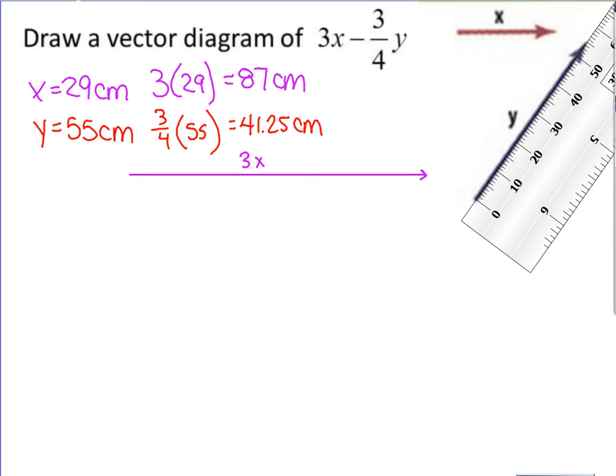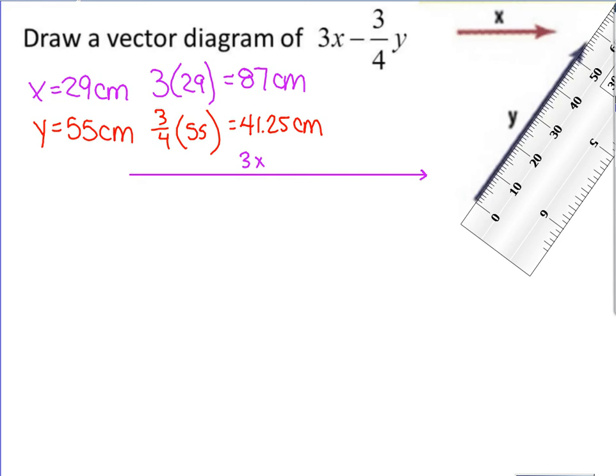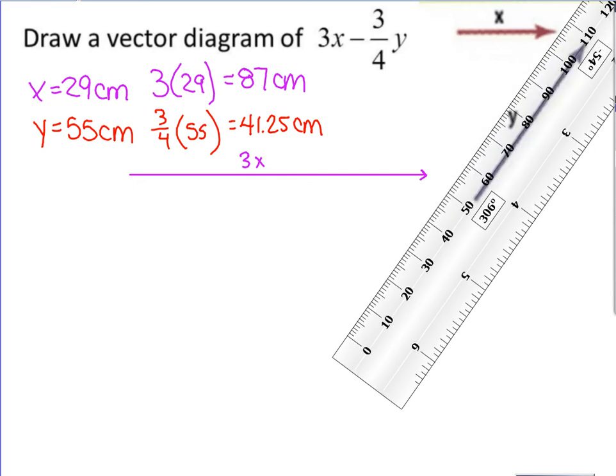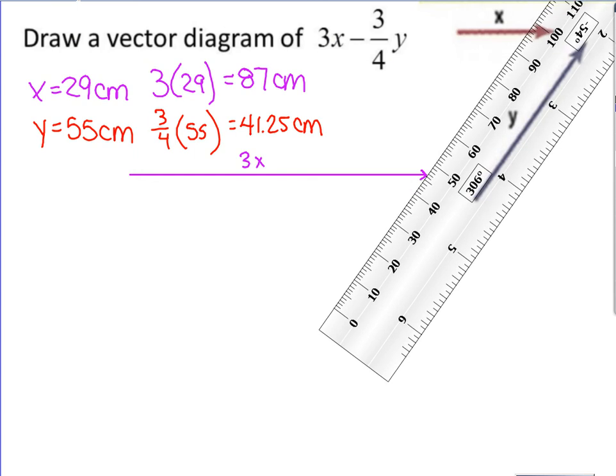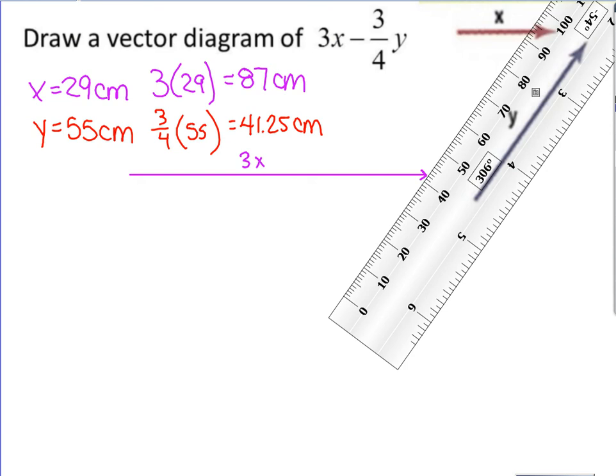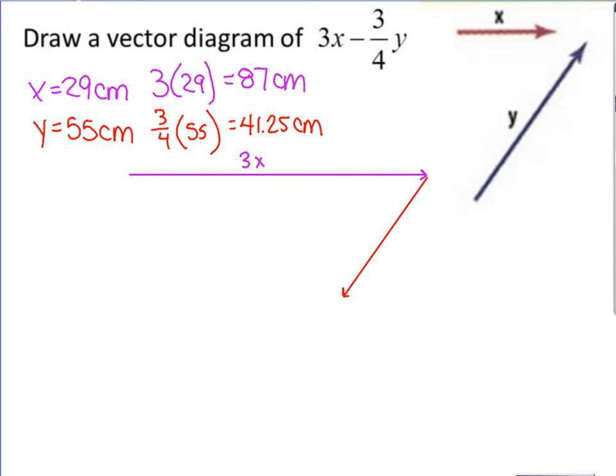We're going to start at the end of the first vector, and we want to keep the angle the same. So we don't move our ruler. Now y is initially pointing upward, but since this says minus, we're going to point it in the opposite direction. We're going to start here and go down instead of up. This is three-fourths of y, and it's a negative three-fourths of y because it's going the opposite direction.